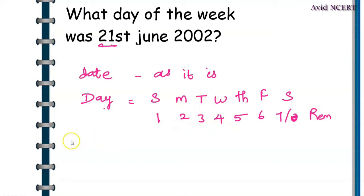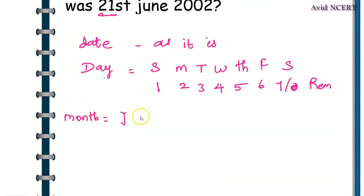The code for months: January, February, March, April, May, June, July, August, September, October, November, and December. The codes go like this: 1, 4, 4, 0, 2, 5, 0, 3, 6, and then again 1, 4, 6.